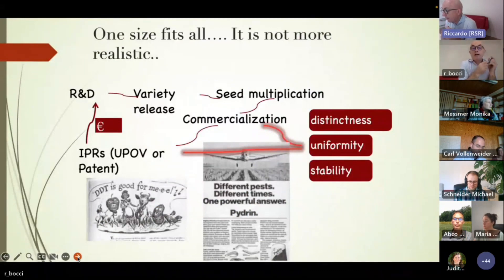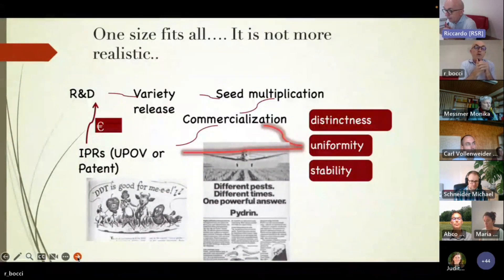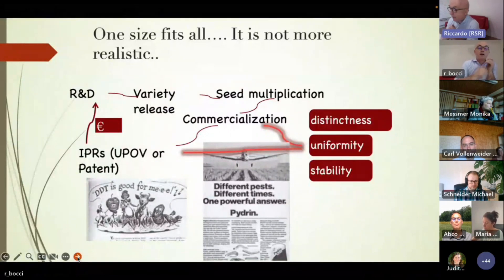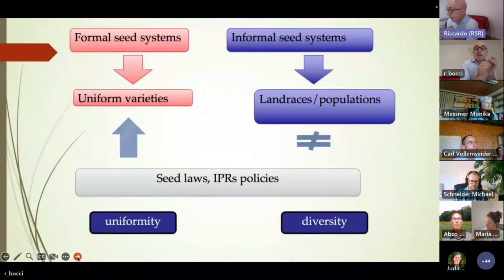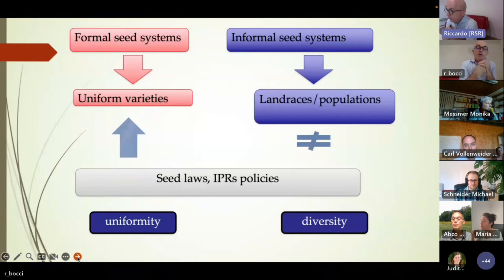After about 20 years of discussions — and some fight at the European level — we realized that the approach we used to have is no longer realistic. The idea that 'one size fits all' took a long time to change in our policymakers. Until roughly the last 10 years, we have mostly supported uniformity and formal seed systems through seed laws and intellectual property rights policies. Now we have to move to diversity and to support also informal seed systems, landraces, and populations — including organic heterogeneous materials.